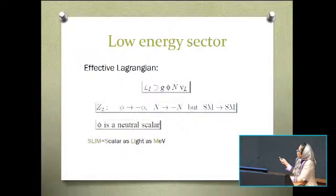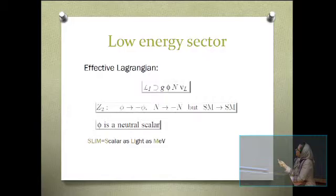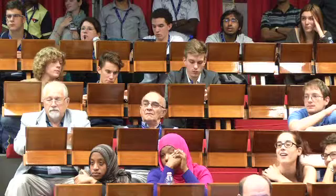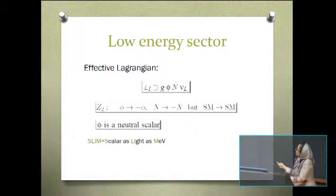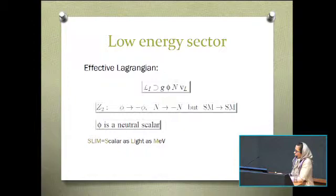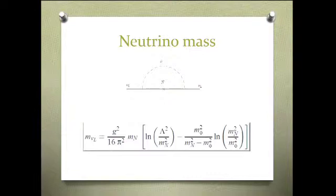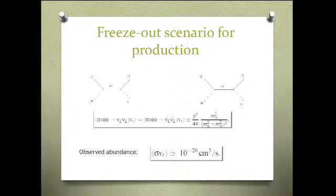And we came up with this idea. Our scenario is based on this effective Lagrangian. We add a new fermion and a scalar. We impose a Z2 symmetry under which new particles are odd but standard particles are even. As a result, the lightest one which we take to be the scalar becomes stable and suitable dark matter. We call it SLIM which stands for scalar as light as MeV.